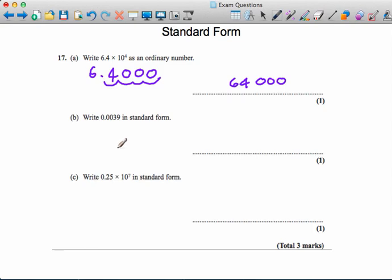Now write 0.0039 in standard form. We need a number between 1 and 10. The digits don't change—it will still be 3 and 9—so it's 3.9 multiplied by a power of 10.